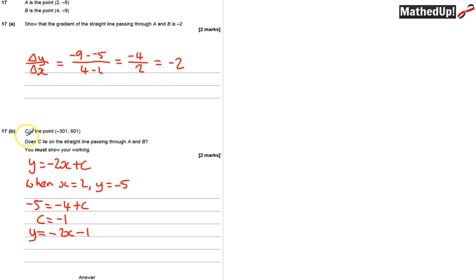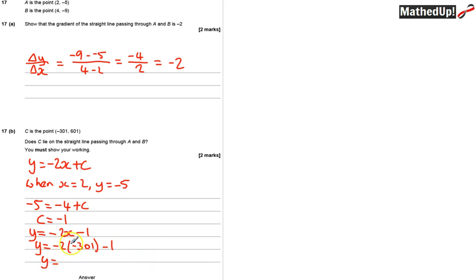I want to check whether C lies on this line. I'm going to see what happens when X is equal to negative 301, and check whether that gives a Y value of 601. So Y is equal to negative 2 times negative 301, take away 1. Negative 2 times negative 301 is positive 602, so Y equals 602 take away 1.